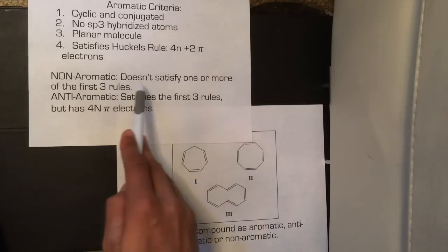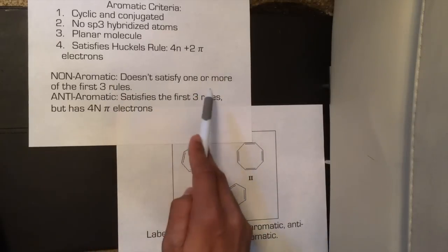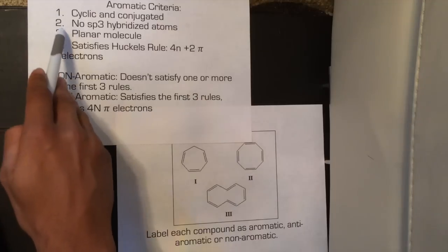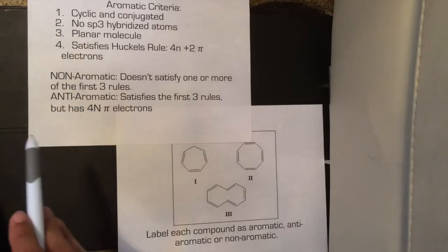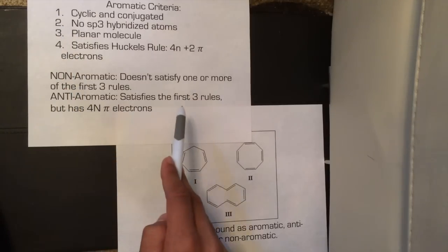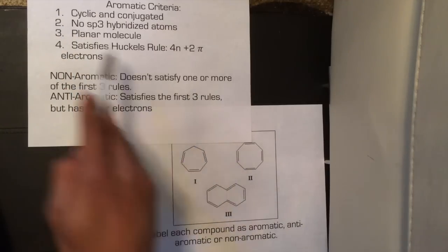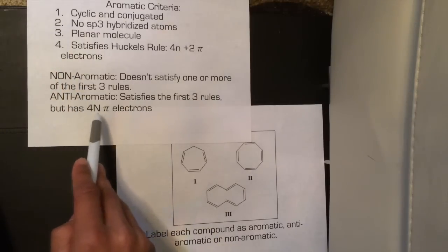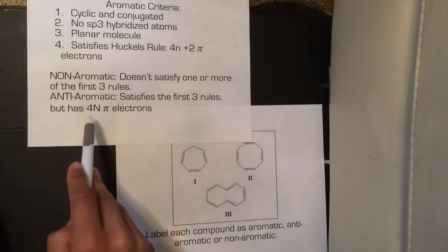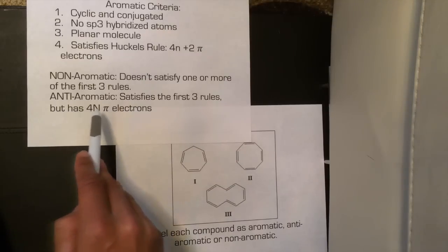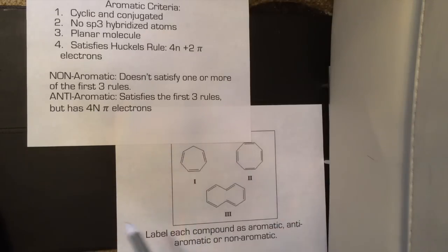Non-aromatic means that it doesn't satisfy one or more of the first three rules — so rule 1, 2, or 3 is not satisfied. Anti-aromatic means that it satisfies the first three rules, but it has 4n pi electrons, so that could be 4 times 1 equals 4, or 4 times 2 equals 8 pi electrons, etc.